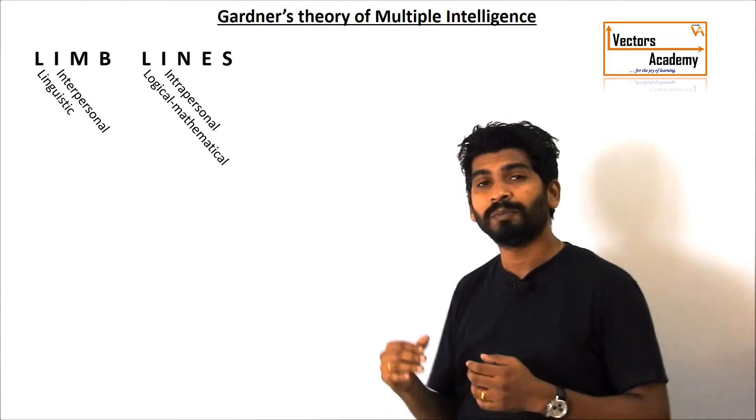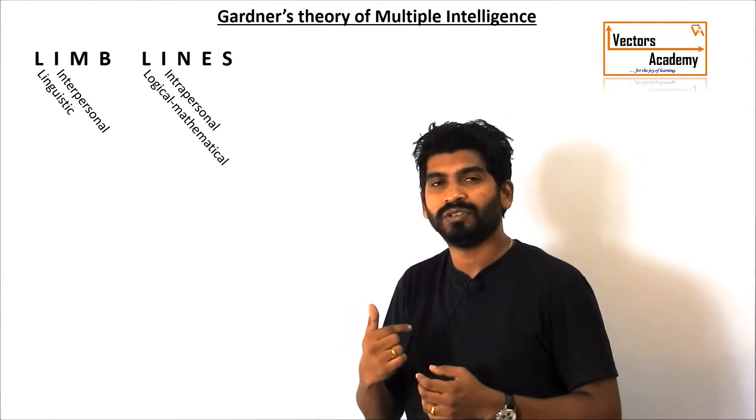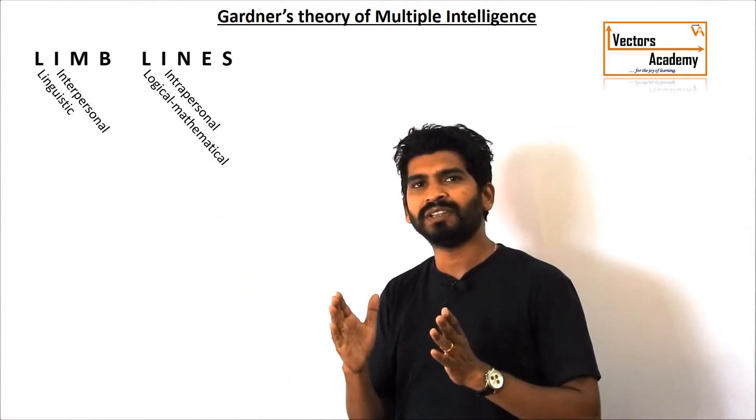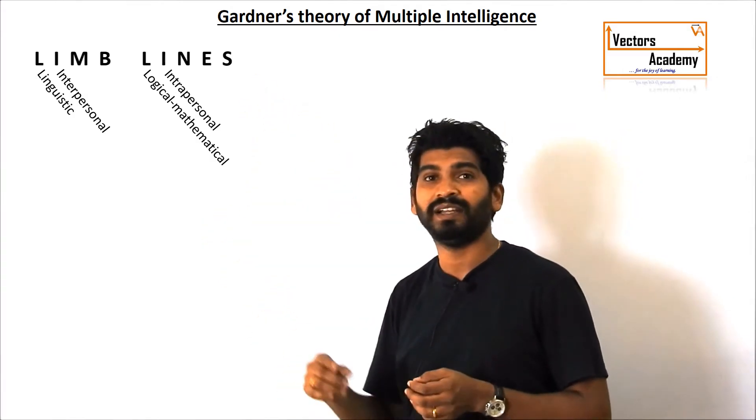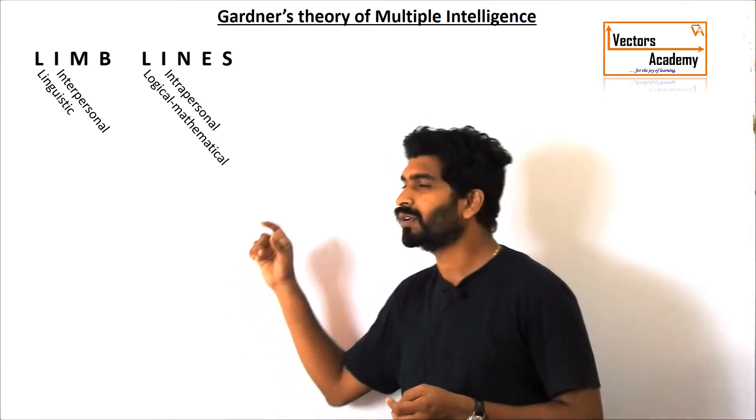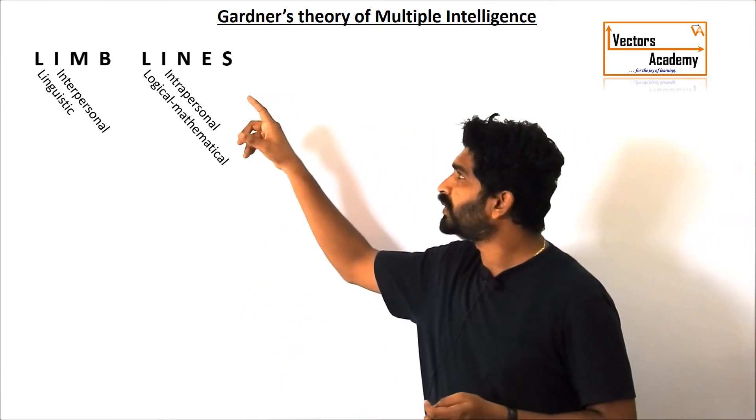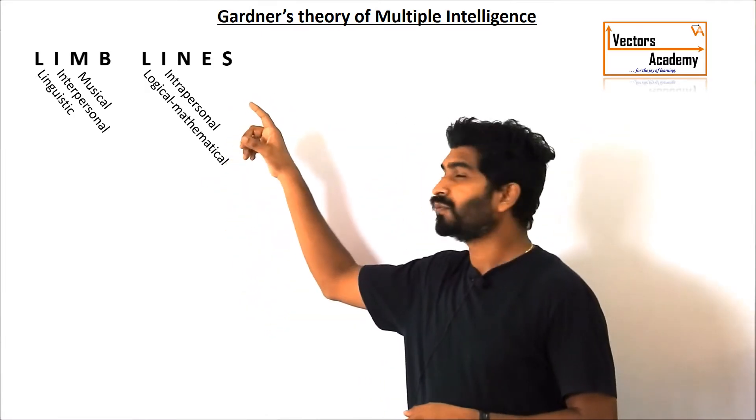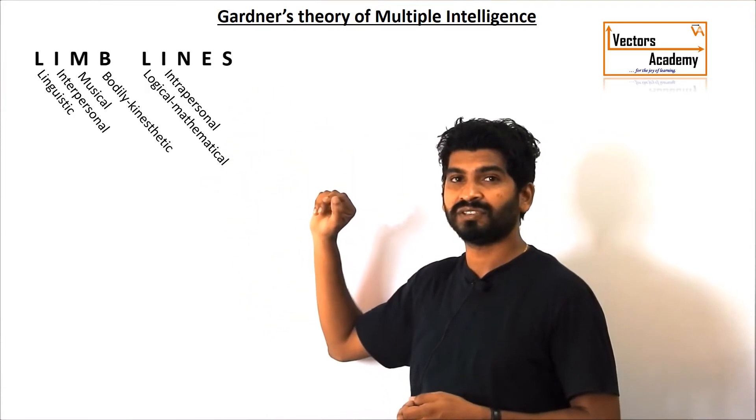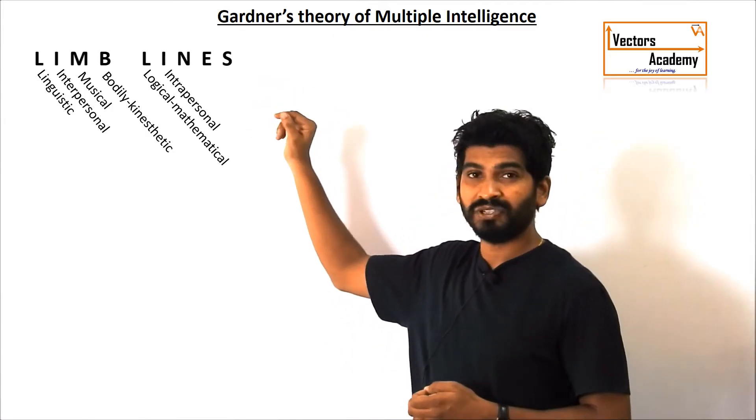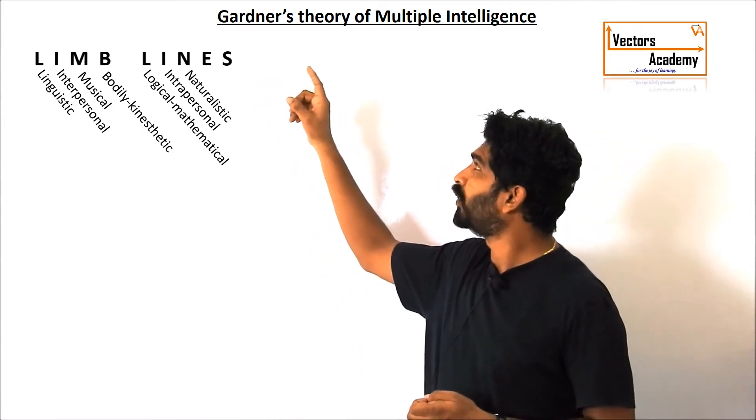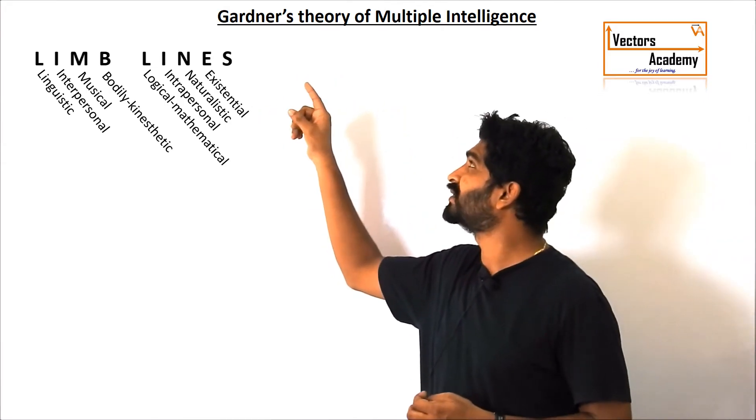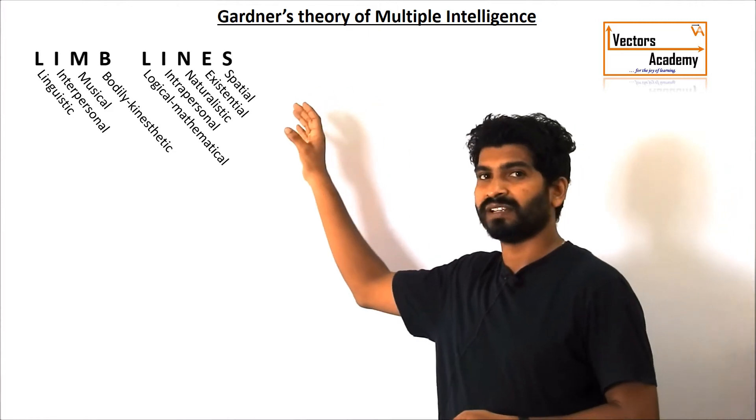Intrapersonal. Intrapersonal is how a person knows the feelings inside a single person. Interpersonal is the interaction between the people and intrapersonal is the interaction of a person within himself. Then comes M. M is for Musical Intelligence. B is for Bodily Kinesthetic Intelligence. S is for Spatial Intelligence. N is for Naturalistic Intelligence. E is for Existential Intelligence. And S is for Spatial Intelligence.